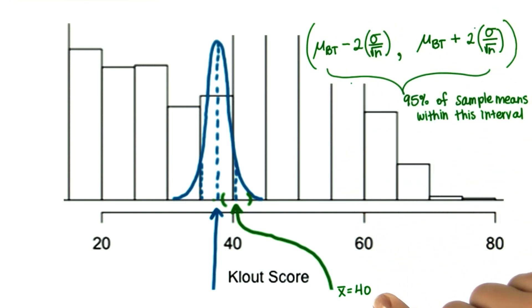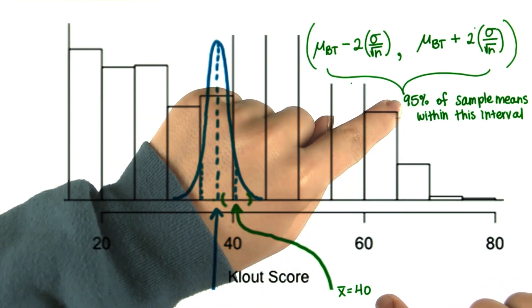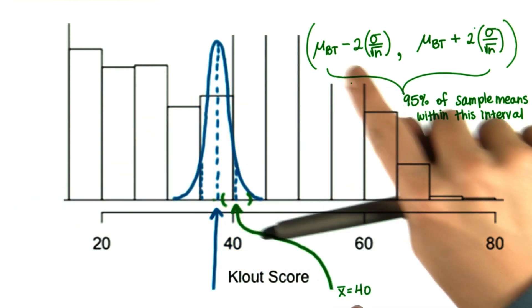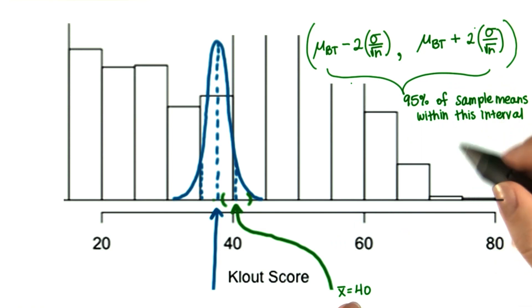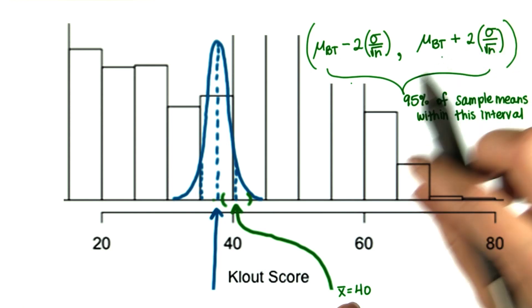Most likely, this is one of those 95%. Let's assume that this is in that interval. If this sample mean is indeed within this interval, then what could the population mean be?